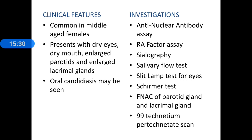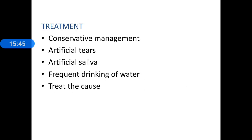FNAC of the parotid gland and lacrimal gland helps establish a histological diagnosis. A technetium scan is also known to help in diagnosing Sjögren's syndrome but is not routinely done. Treatment: conservative management is the line of treatment. Artificial tears can be given for dry eyes; artificial saliva is available for dry mouth, and the person should be encouraged to drink lots of water frequently. Once identified, find out whether there is any association with connective tissue disorders and treat the cause. This is briefly about Sjögren's syndrome — it is a vast topic, but these are the key points.